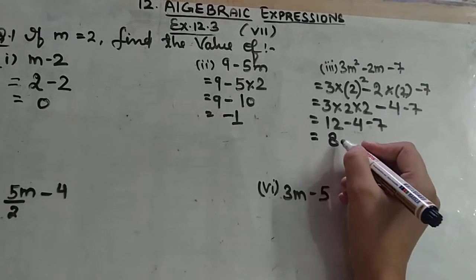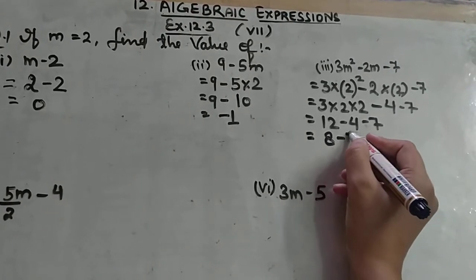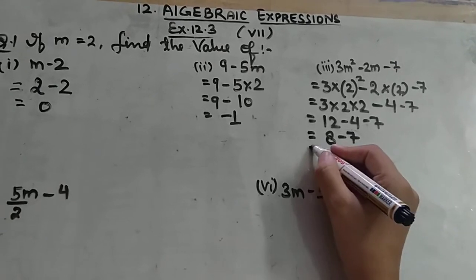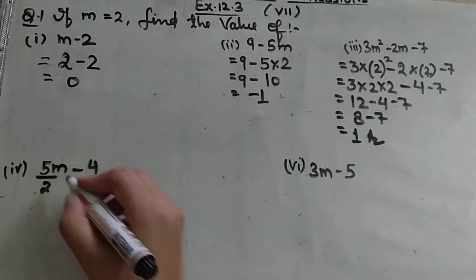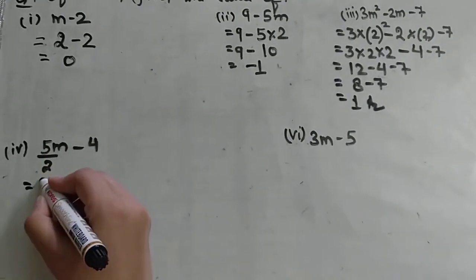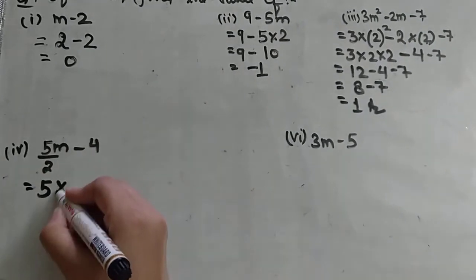Then you have minus 7. 8 minus 7 equals 1. And again here, 5m minus 4. M's value is 2, so 5 into 2 is 10 minus 4.